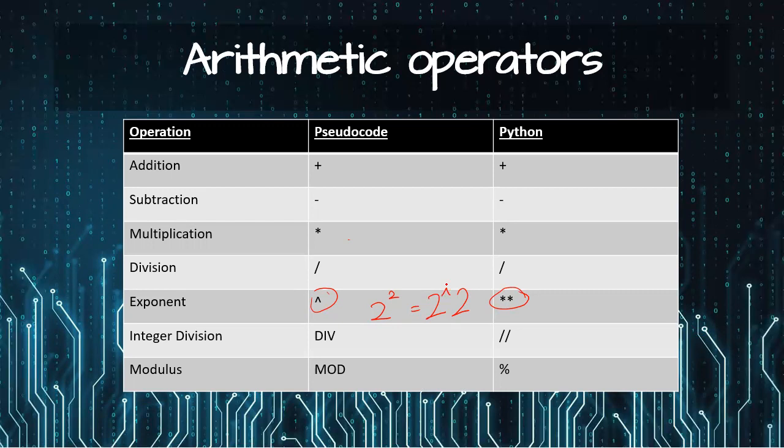And in Python, there is no caret. You use that double asterisk sign for the exponent value. Integer division or the modulus - both are the opposites.